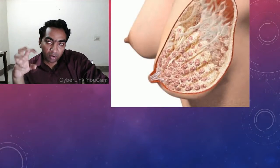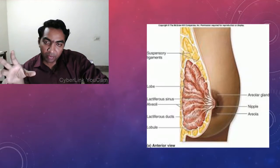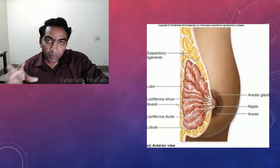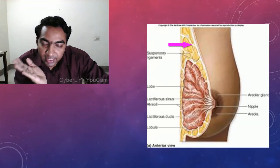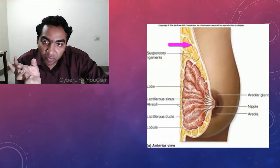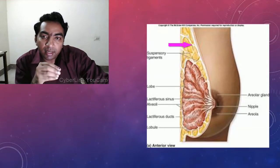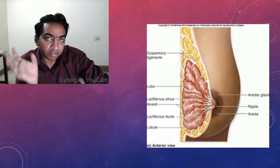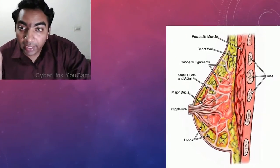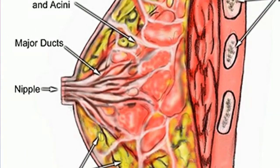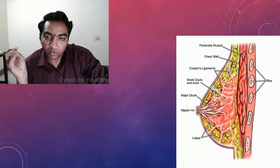Coming to a closer view, we can see the Cooper's ligaments. Cooper's ligaments are extensions of the pectoralis fascia — they attach to the dermis from the pectoralis fascia and give the baseline shape and architecture of the breast. The fat lobules of the breast are interspersed within the Cooper's ligament. We can also see the lobules and the lactiferous ducts, with 10 to 15 lactiferous ducts from the lobules finally draining into the nipple.